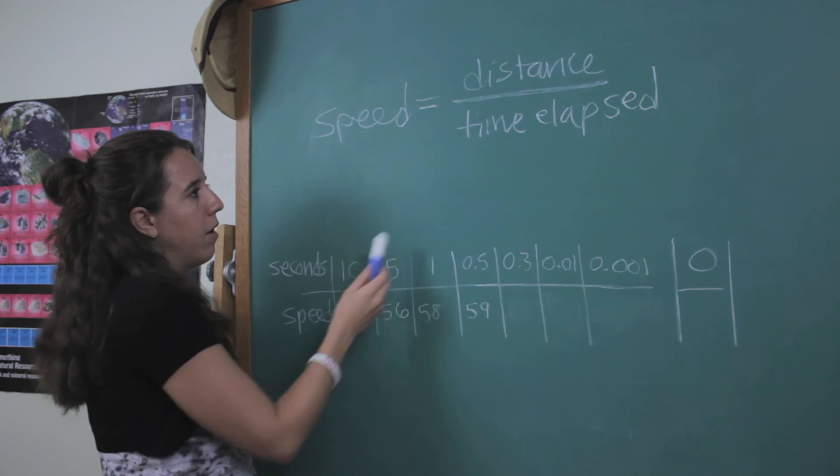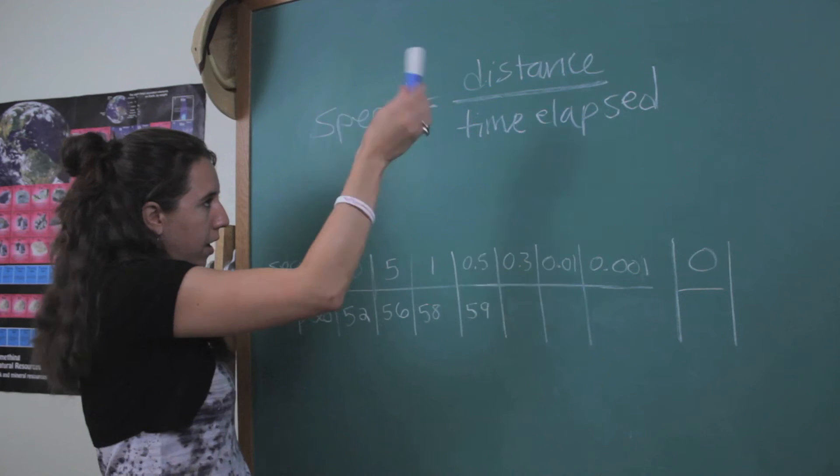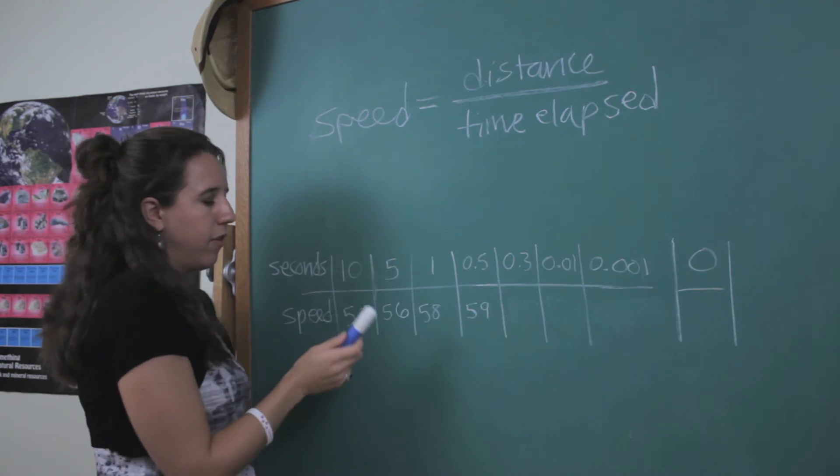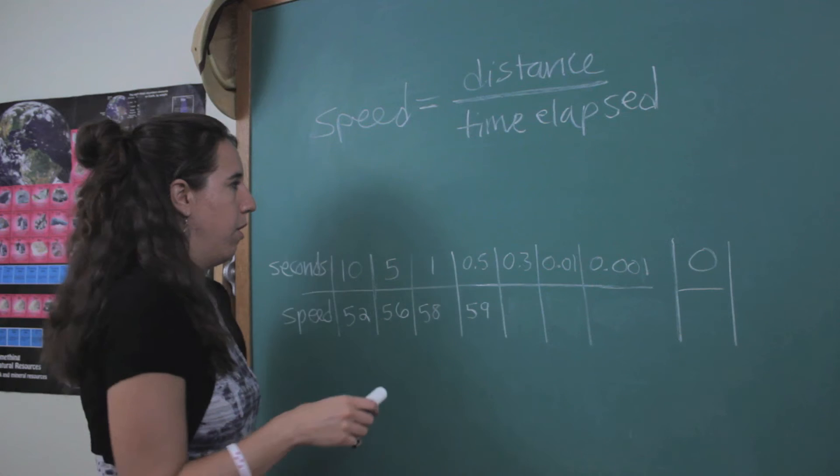So the first time period, the time elapsed was 10 seconds. And I did my calculation and my speed was 52 miles per hour or whatever units you want.